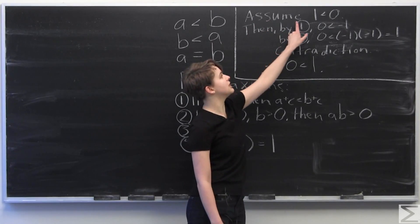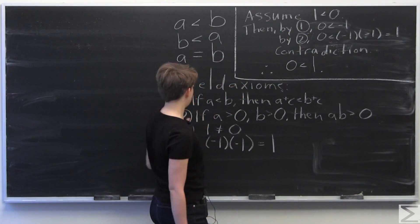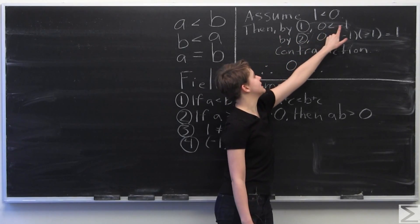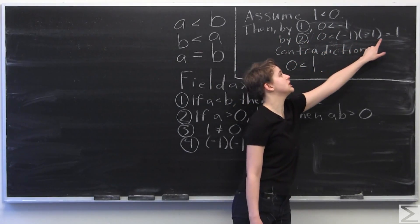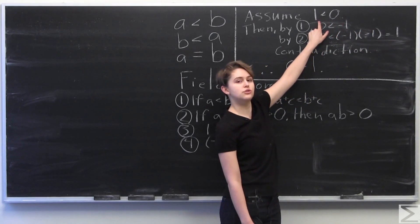So now we assume that 1 is less than 0. So by 1 here, we see that 0 is less than negative 1. By 2, that 0 is less than negative 1 times negative 1, which equals 1, which contradicts what you assumed up here.